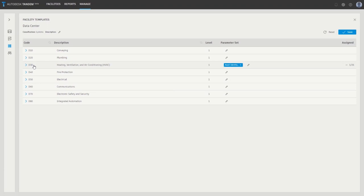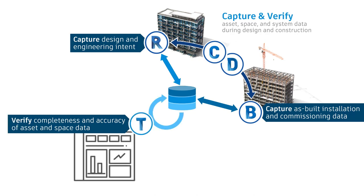Note that parameter sets act as building blocks of data, such that the data for each asset type can be defined from multiple parameter sets. Once the data requirements are specified, Autodesk Tandem enables you to capture the required data from the design and engineering intent, from the as-built installation and commissioning data, and to verify the completeness and accuracy of the asset, space, and system data. This data creates a digital replica of the facility within Autodesk Tandem and tracks every change made, providing a digital thread of information for every asset and space in the facility.